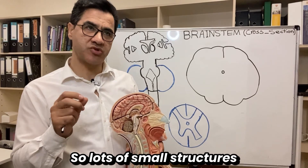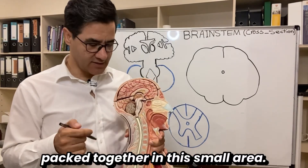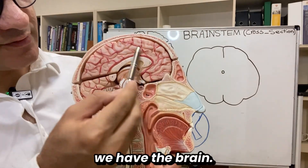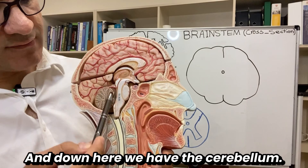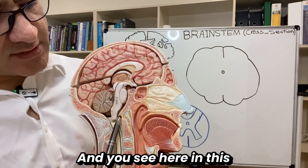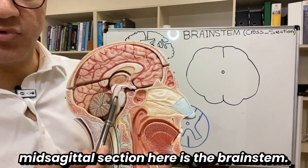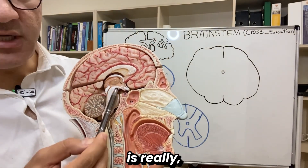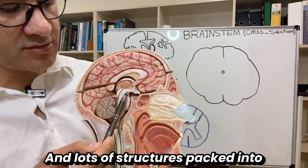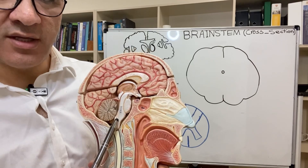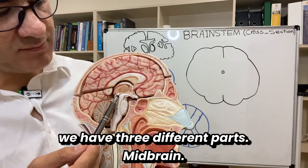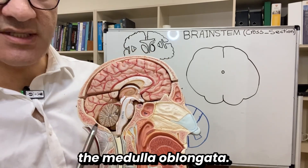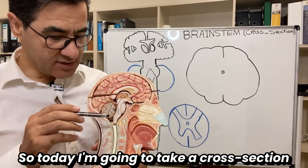Lots of small structures are packed together in this small area. This is the mid-sagittal section — at the top we have the brain, down here we have the cerebellum, and here in this mid-sagittal section is the brain stem. You can see how really small it is. We have three different parts: midbrain, this projection is called the pons, and down here we have the medulla oblongata.